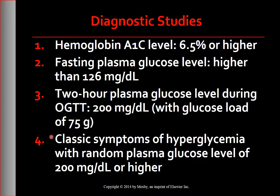If a patient presents with hyperglycemic crisis or clear symptoms of hyperglycemia — polyuria, polydipsia, polyphagia, and unexplained weight loss — with a random plasma glucose level of 200 mg per deciliter or higher, repeat testing is not warranted. Otherwise, criteria 1 through 3 should be confirmed by repeat testing to rule out lab errors.